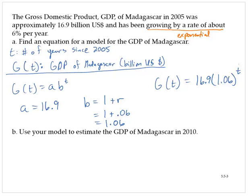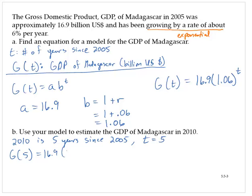Part B asks us to use our model to estimate the GDP of Madagascar in 2010. 2010 is five years since 2005, so this implies that t would be equal to 5. So to find the GDP, we will evaluate g of 5, which would be 16.9 times 1.06 to the fifth power.